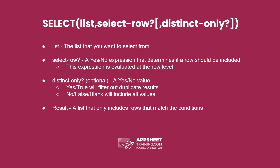The select expression has up to three parameters. The first is the list that you want to select from. The second is a select row expression that will determine whether or not a row should be included.